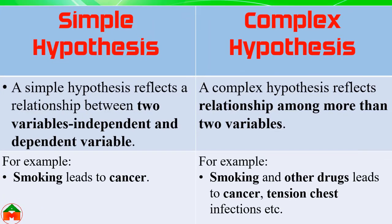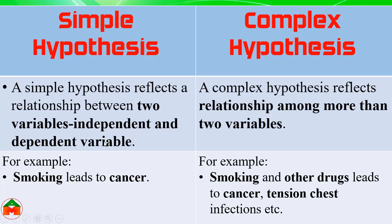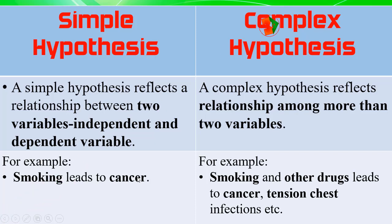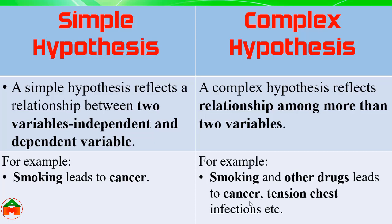A Simple Hypothesis reflects the relationship between two variables — one independent and one dependent. A Complex Hypothesis reflects relationships among more than two variables. Example of simple hypothesis: smoking leads to cancer, where smoking is the independent variable and cancer is the dependent variable. Example of complex hypothesis: smoking and other drugs leads to cancer, tension, chest infection, etc. — here there are two independent variables and three dependent variables, making it a complex hypothesis.